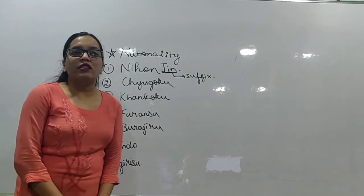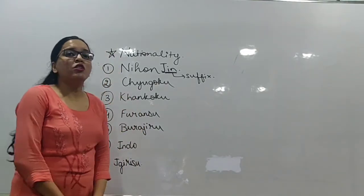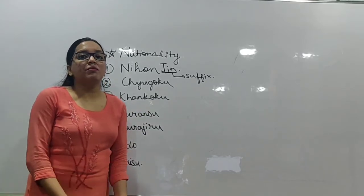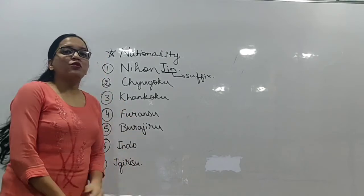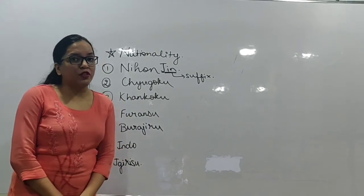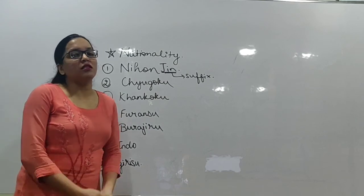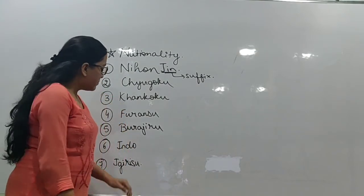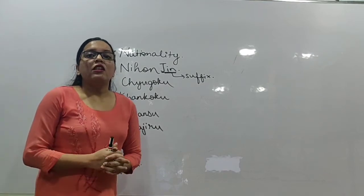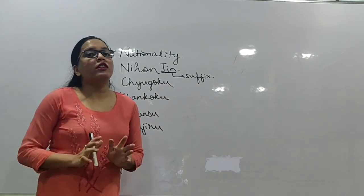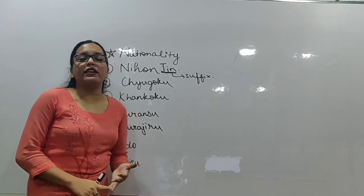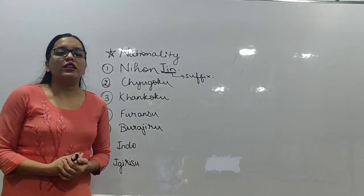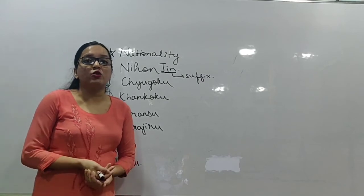Chugoku-Jin means a Chinese person. Khankoku-Jin means a Korean person. Furansu-Jin means a French person. Burajiru-Jin means a Brazilian person. And Indo-Jin means an Indian person. For nationalities, there is no exception for Indo or Igirisu — the exception was only for languages. So Indo-Jin is correct for Indian.